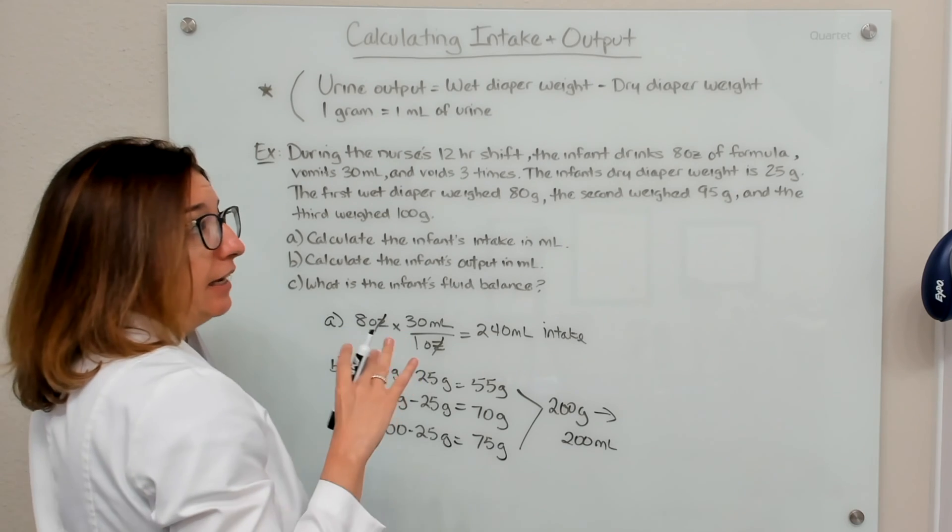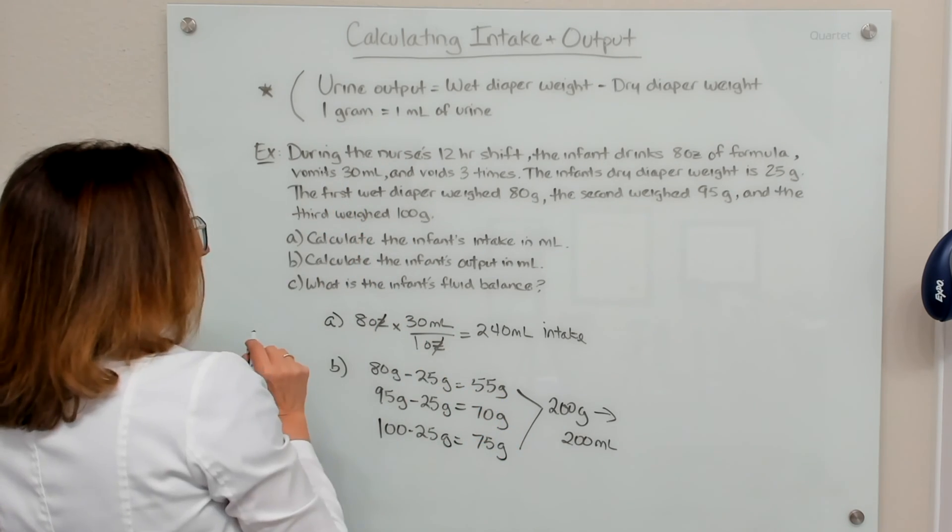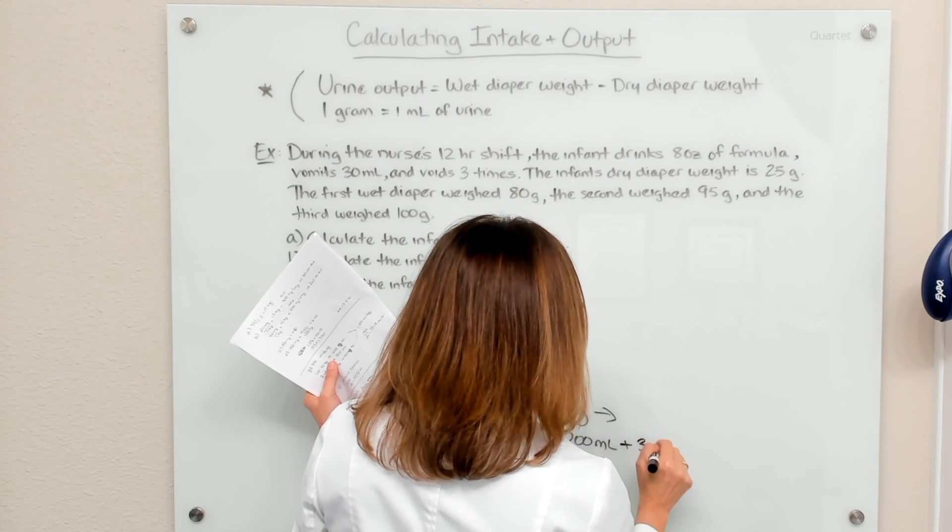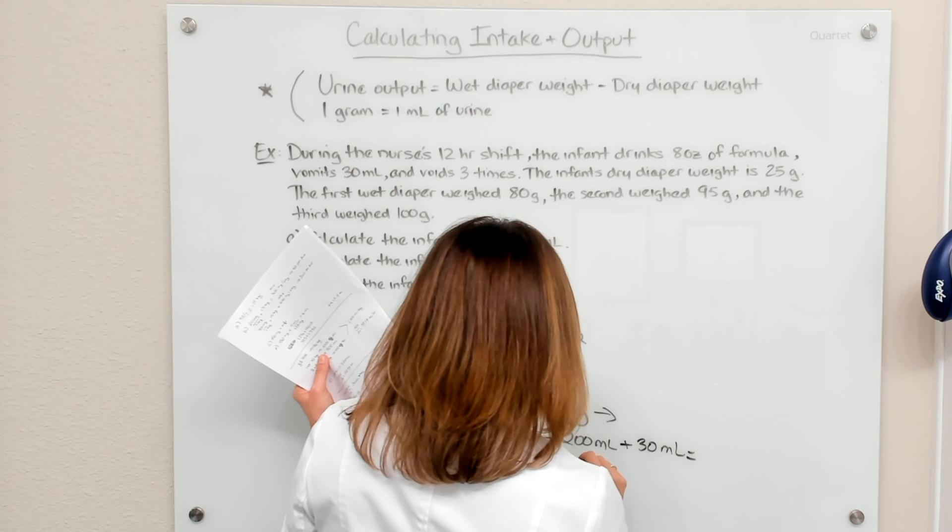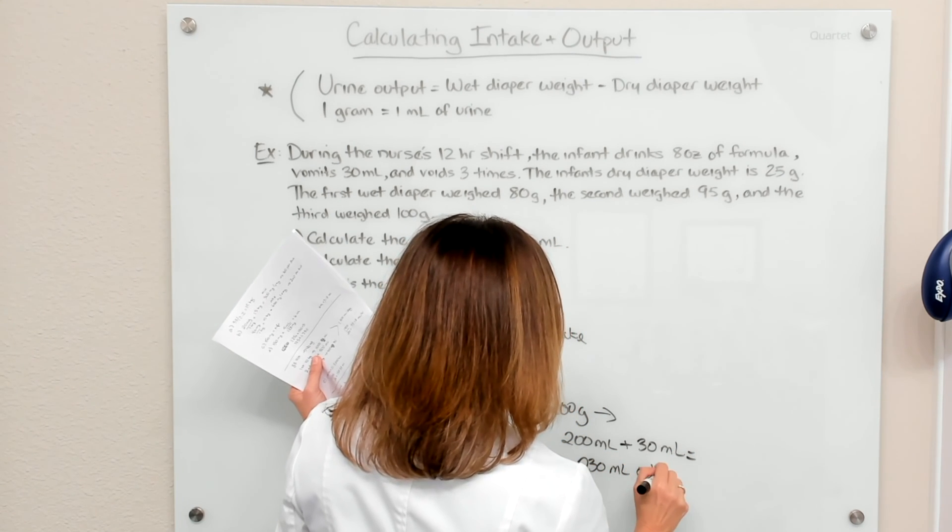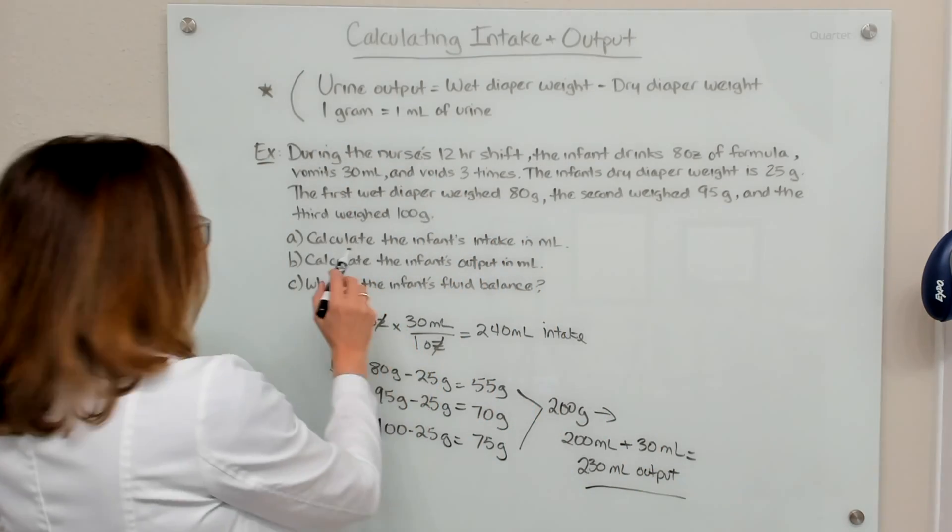But remember to calculate the infant's total output, we gotta also add in this emesis. So 200 plus that 30 equals 230 mls of output. So that is the answer to part B.